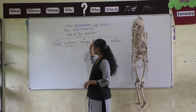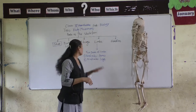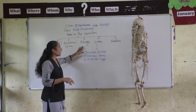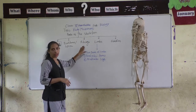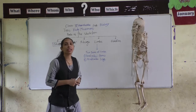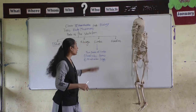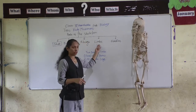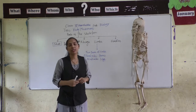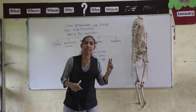We have already discussed the skull, backbone, and ribcage. Today we will move to the next part of the skeleton — the limbs. The skeleton consists of two pairs of limbs.